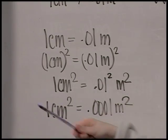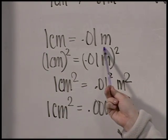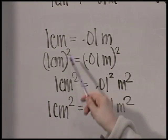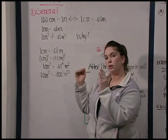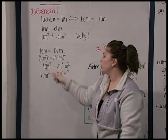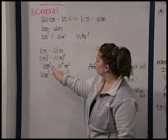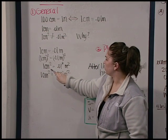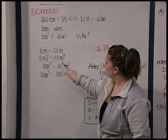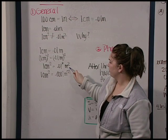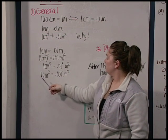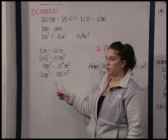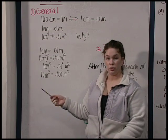Well, one centimeter equals 0.01 meters. When you square, you can't just square the units. You have to square the whole side of the equation. So you square both sides. One squared is one centimeter squared. So one centimeter squared equals 0.01 squared meters squared. This turns out to be one centimeter squared equals 0.0001 meters squared.